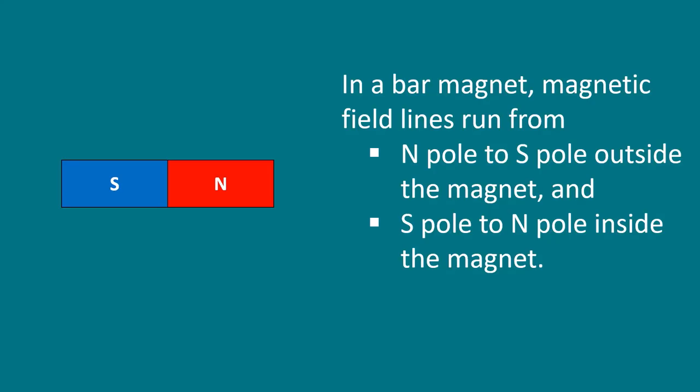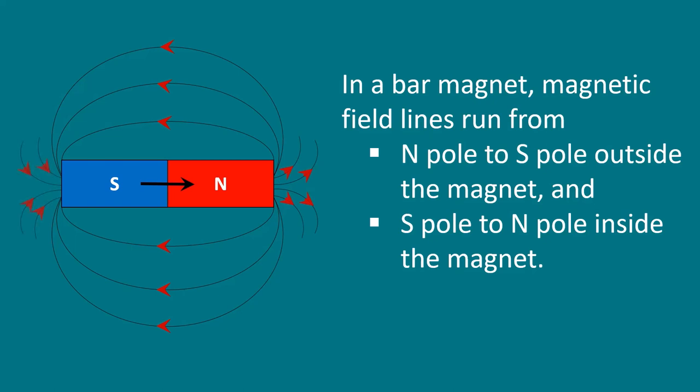We know that magnetic field lines run from north pole to south pole outside the magnet and from south pole to north pole inside the magnet. Which clearly means if magnetic field lines are coming out of magnet, it is the north pole, and if lines are going inside the magnet, it is south pole.